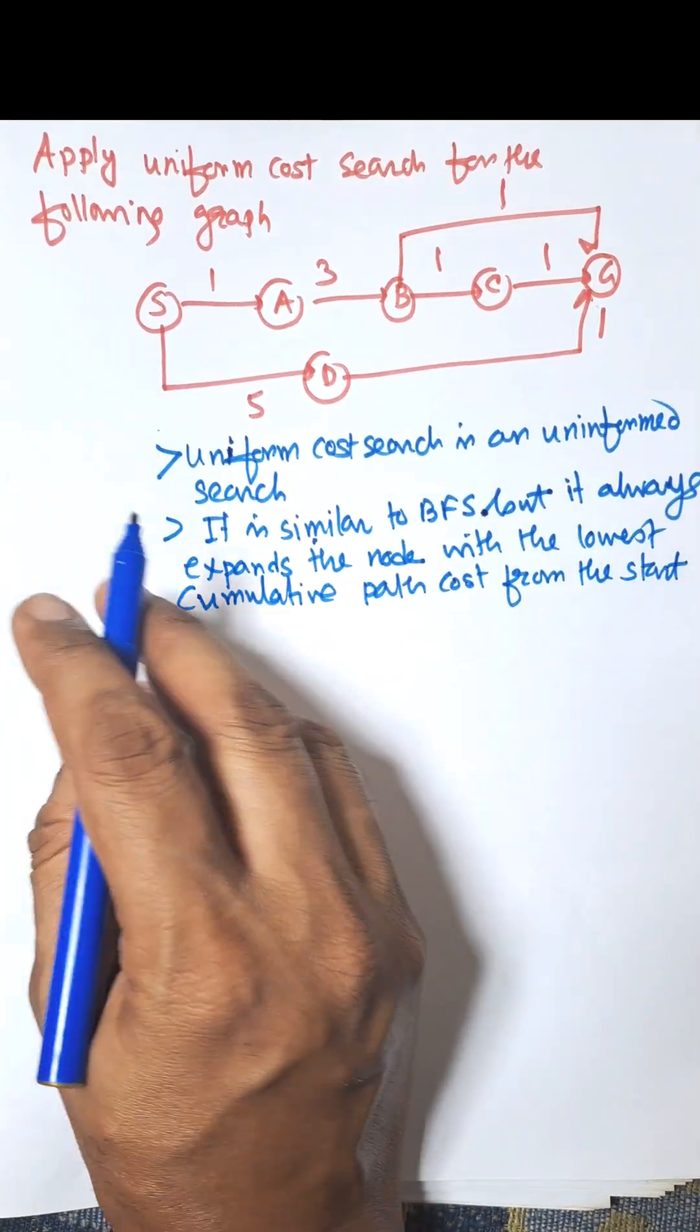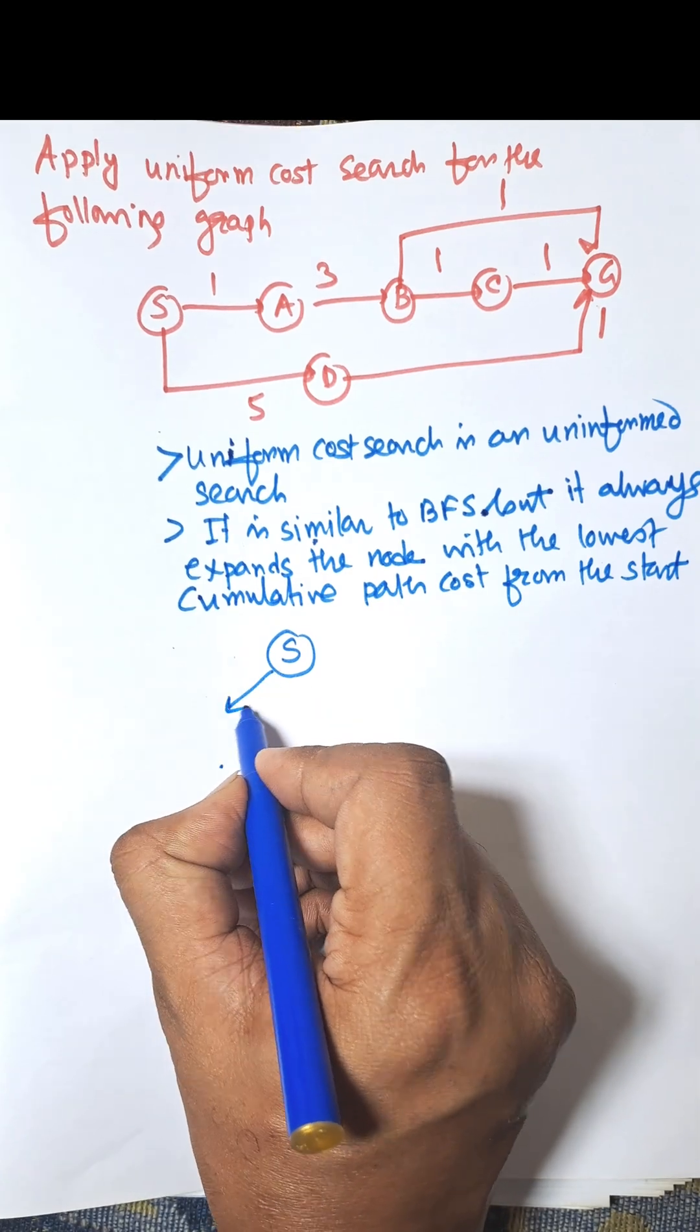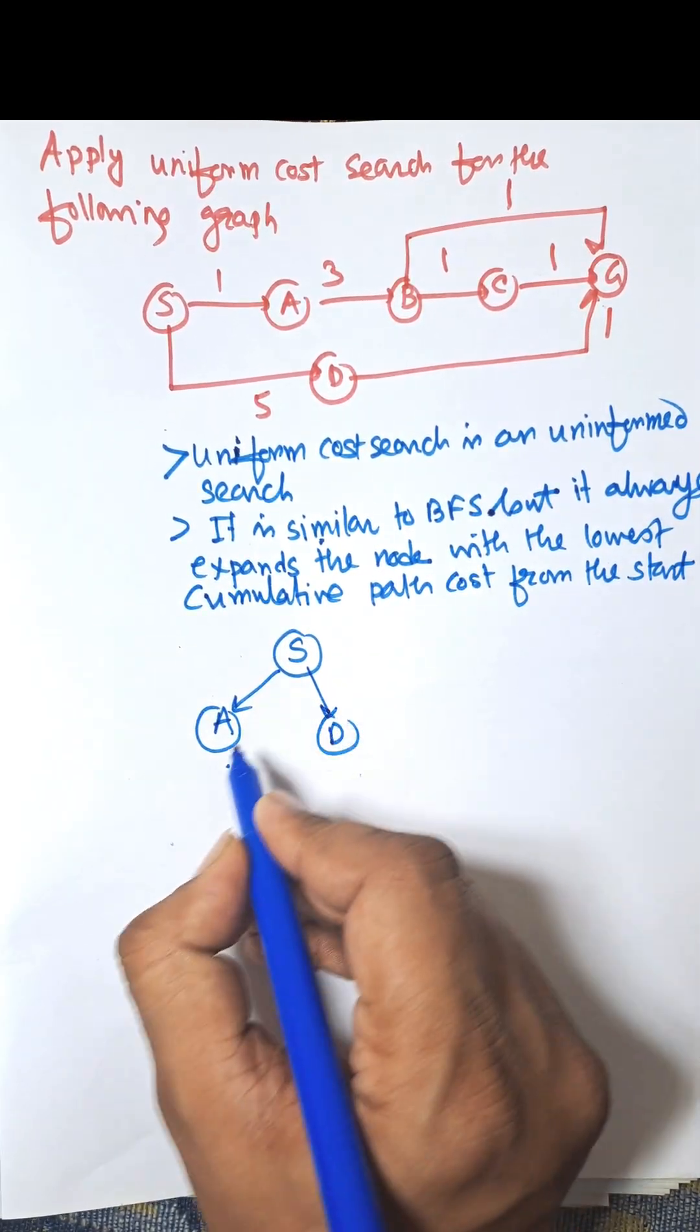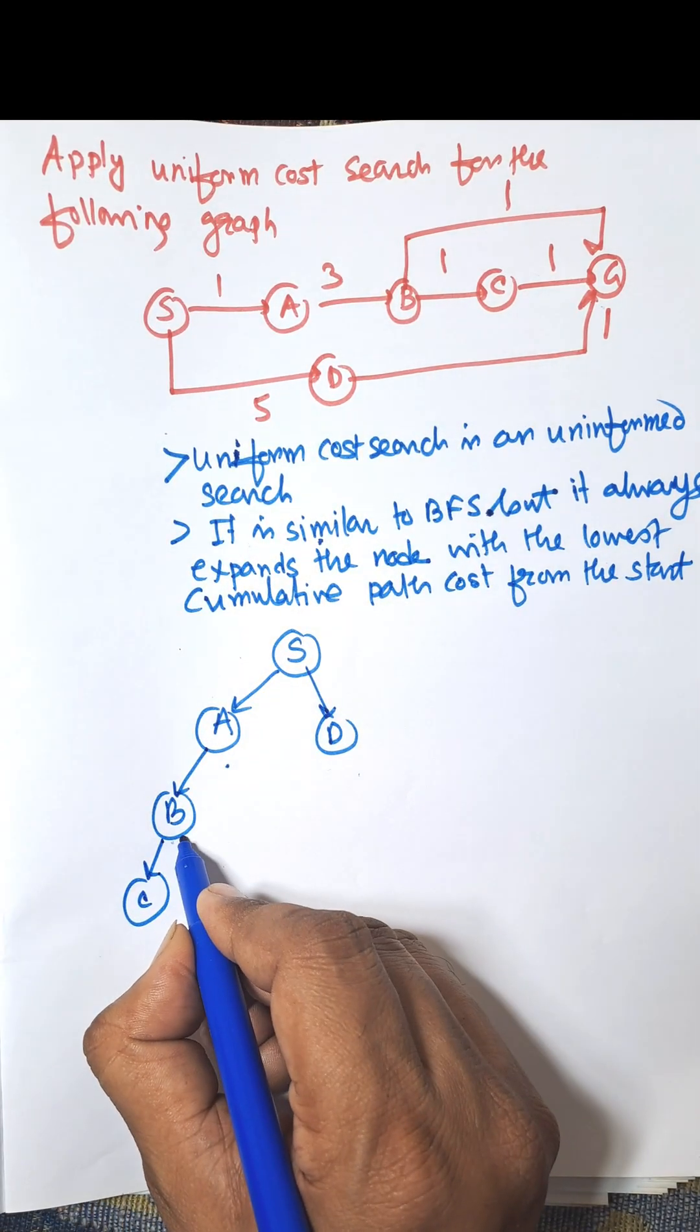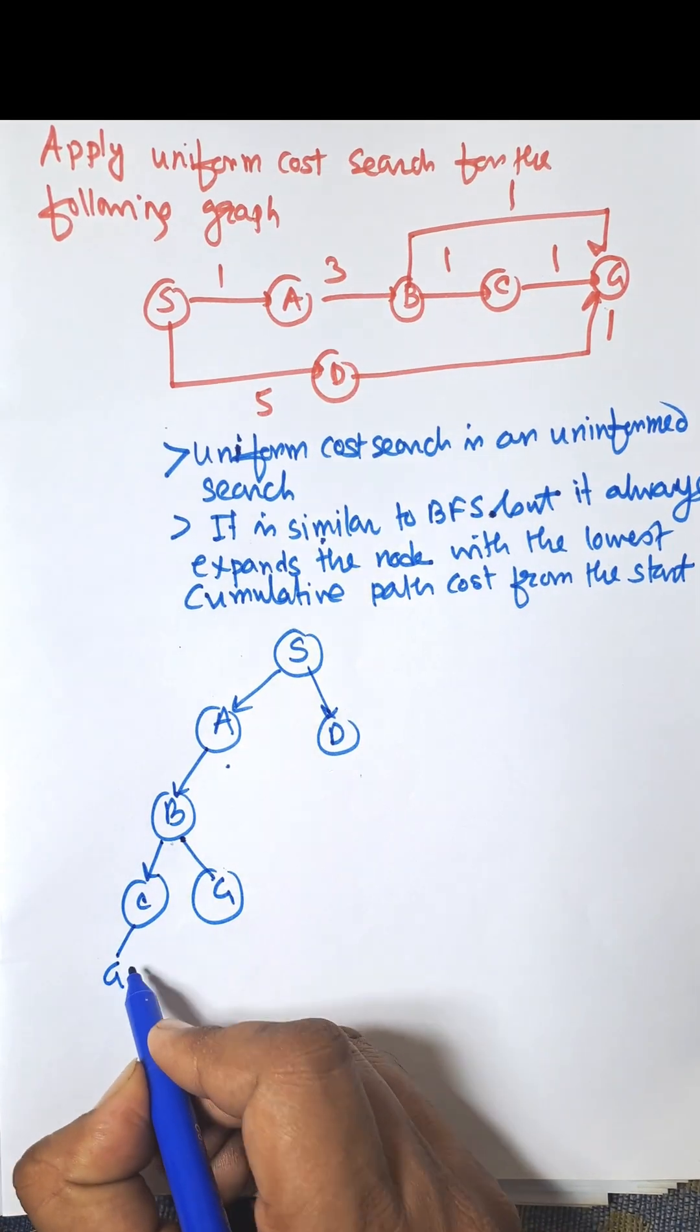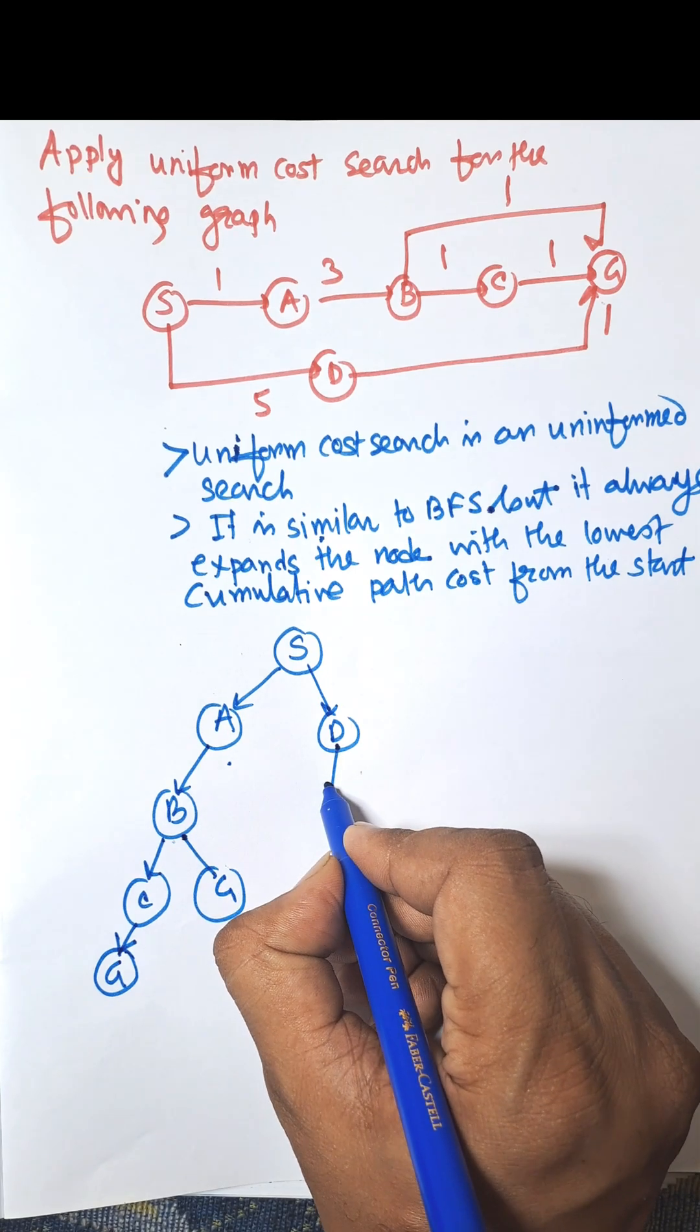Here we need to find the search space tree. S is the root, then we can move S to A or S to D. From A we can move A to B. From B we can move either to C or we can move to G. From C there is only one path, that is G. From D there is a path that is G.